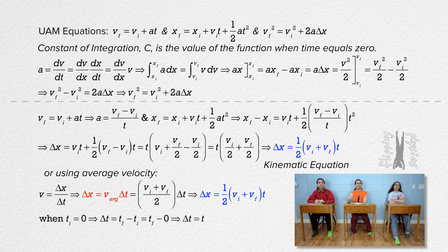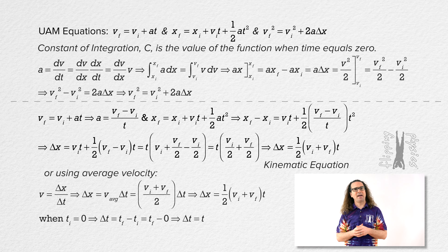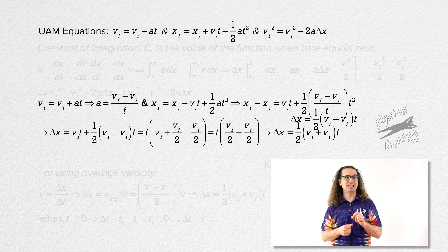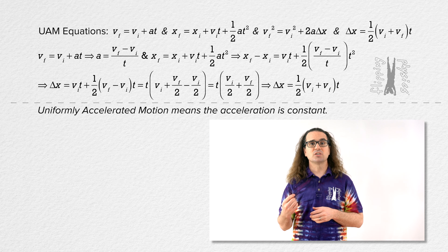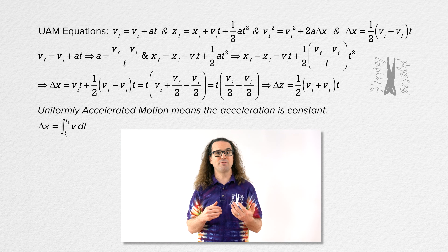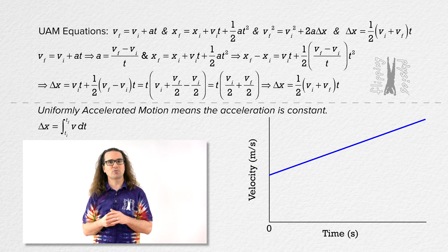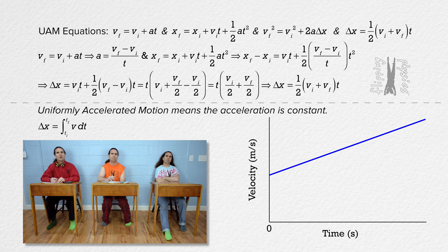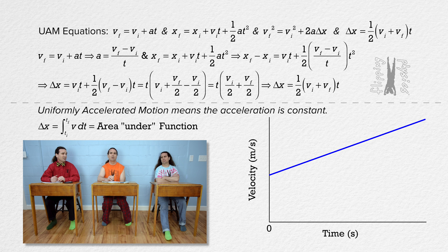I thought we were going to use integrals to solve for all four UAM equations. How about y'all do that? Use the fact that uniformly accelerated motion means the acceleration is constant. Displacement equals the definite integral of velocity with respect to time from time initial to time final. And this example graph of velocity as a function of time for uniformly accelerated motion — we know one definition of an integral is that it is the area under a function.